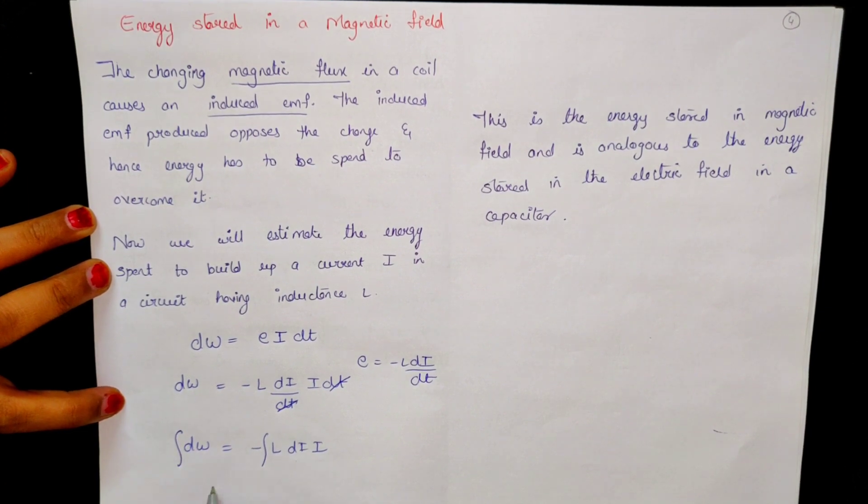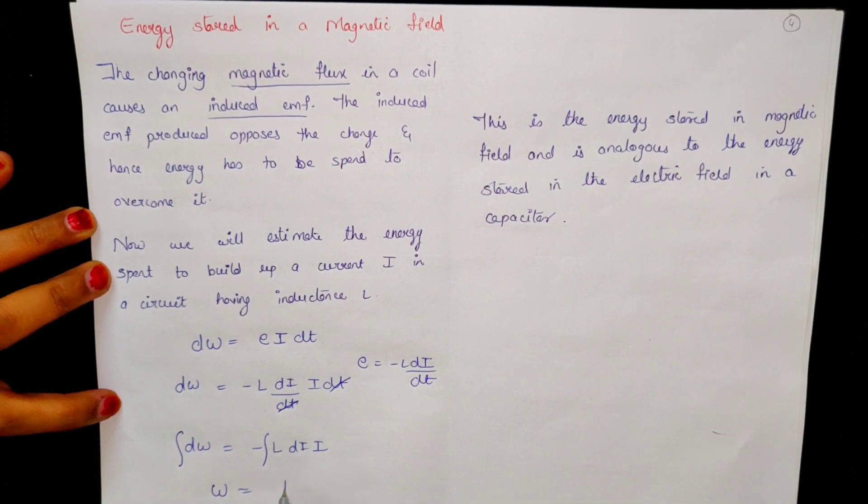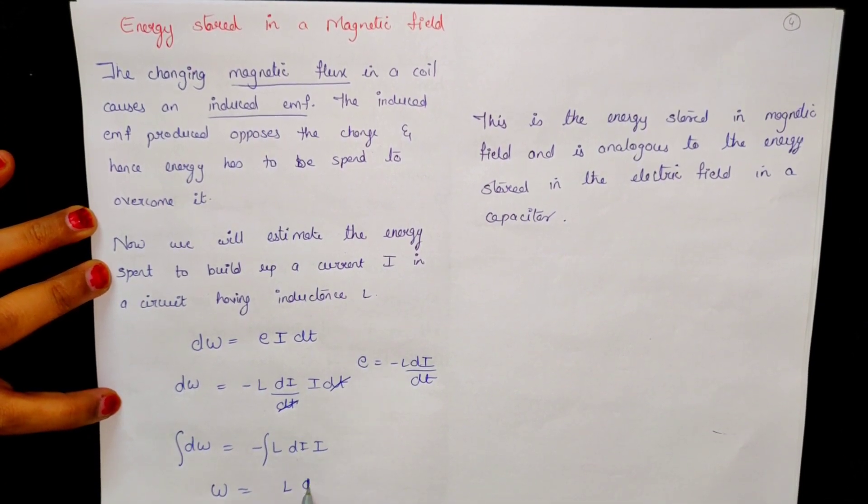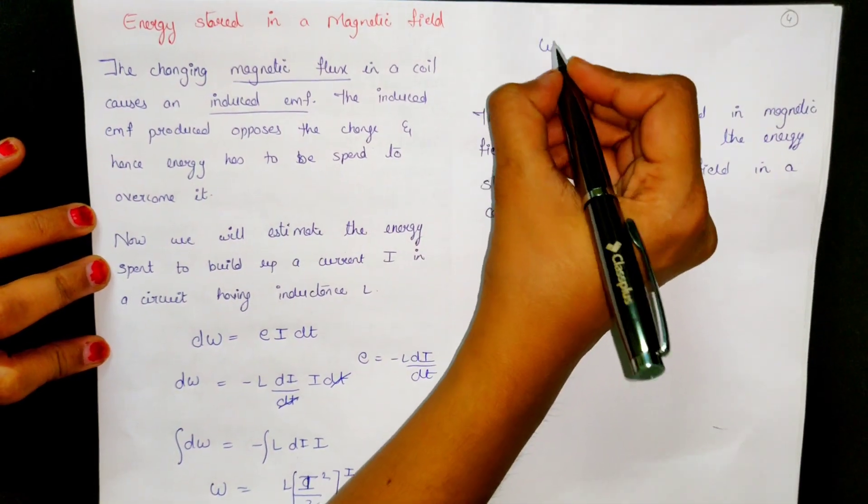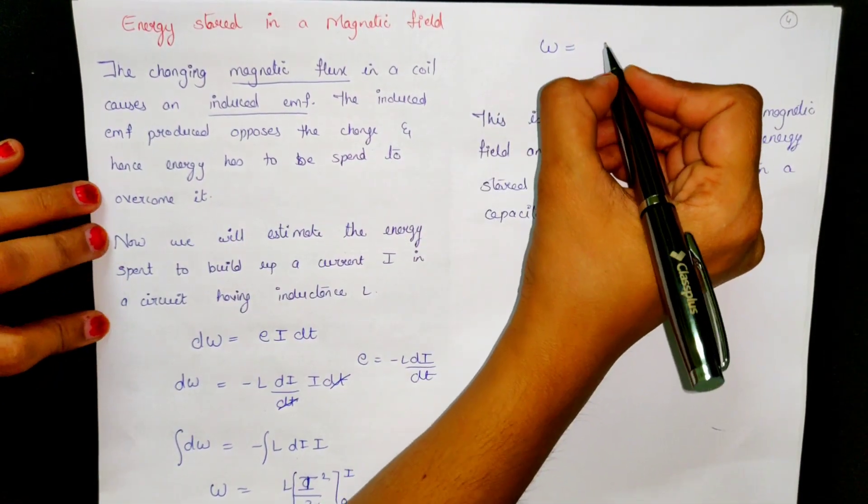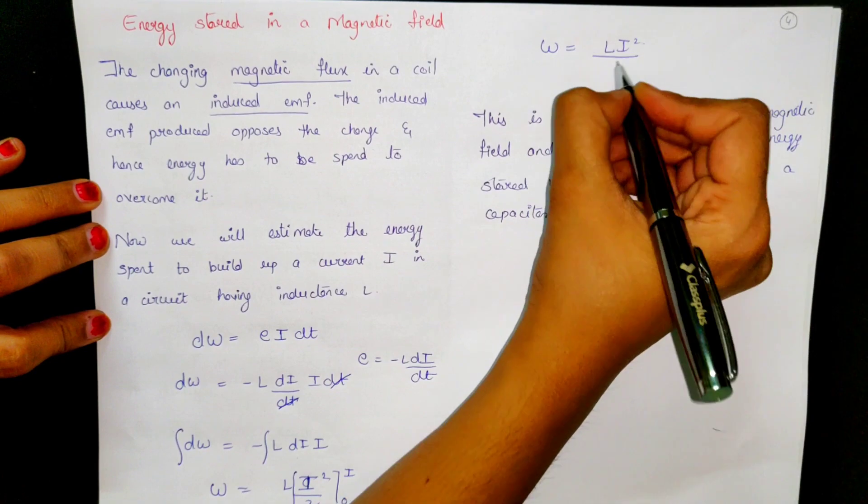We have to take total work, so we will integrate. We will get L out. This is i square by 2. Where is the limit? The limit is 0 to i. So work done that will come L i square by 2.